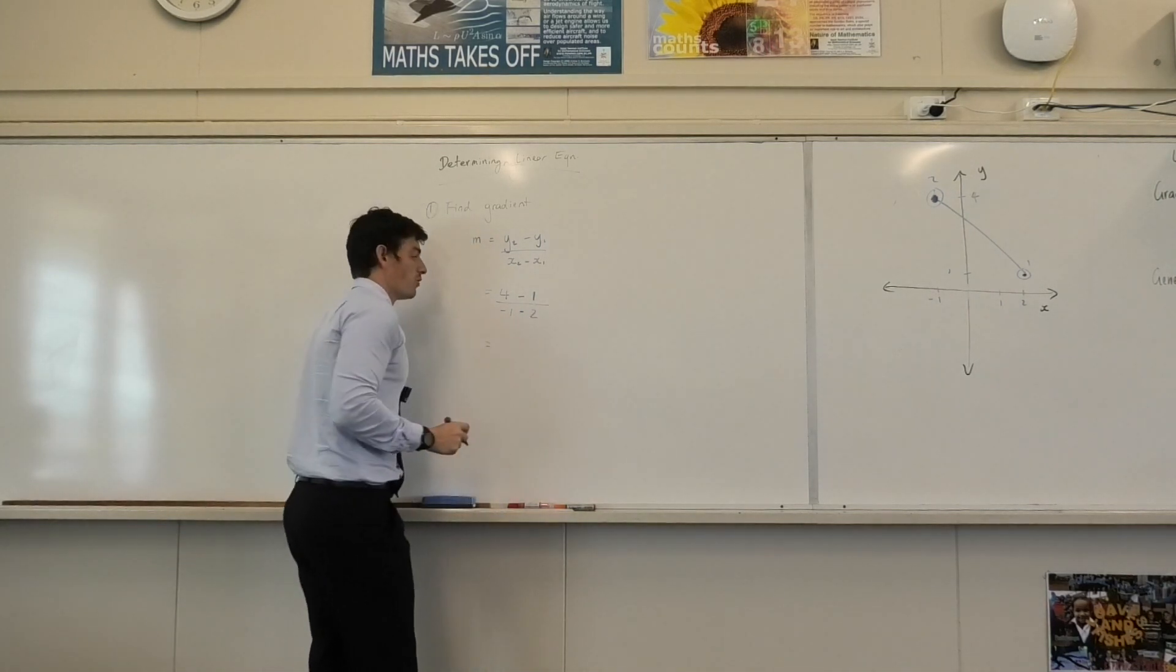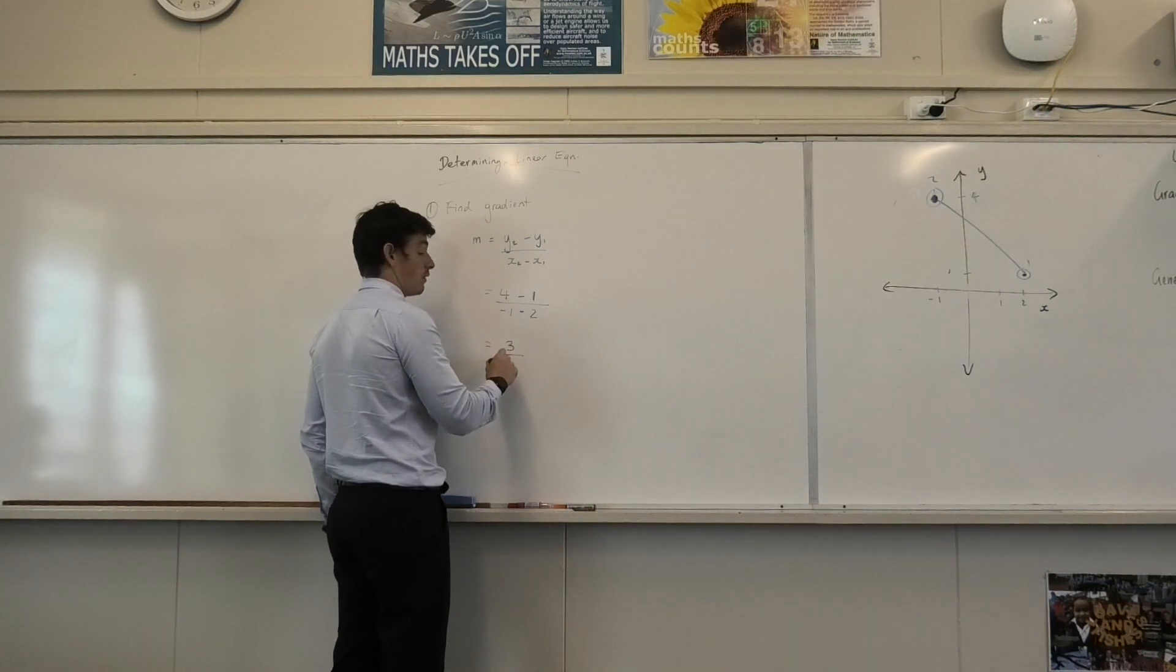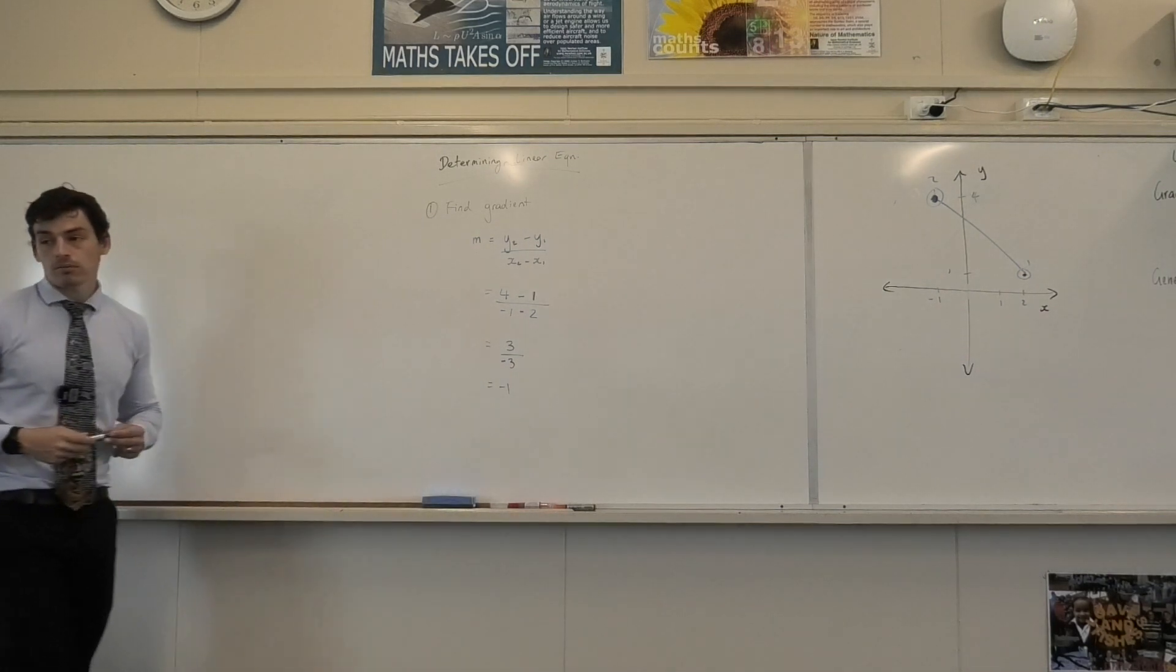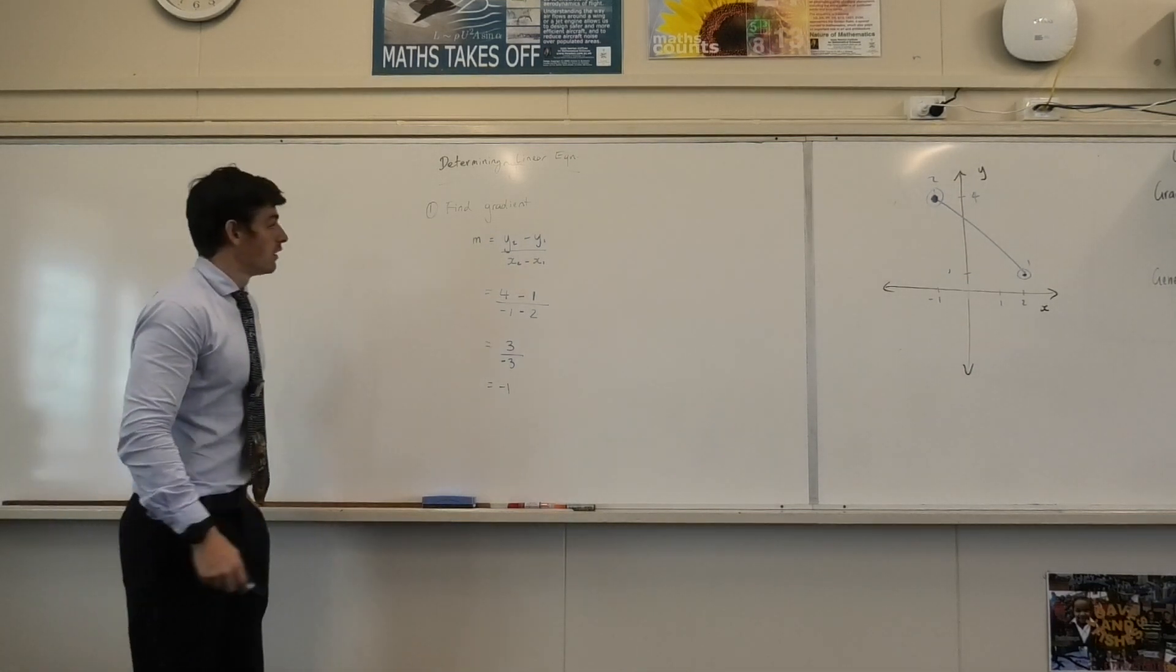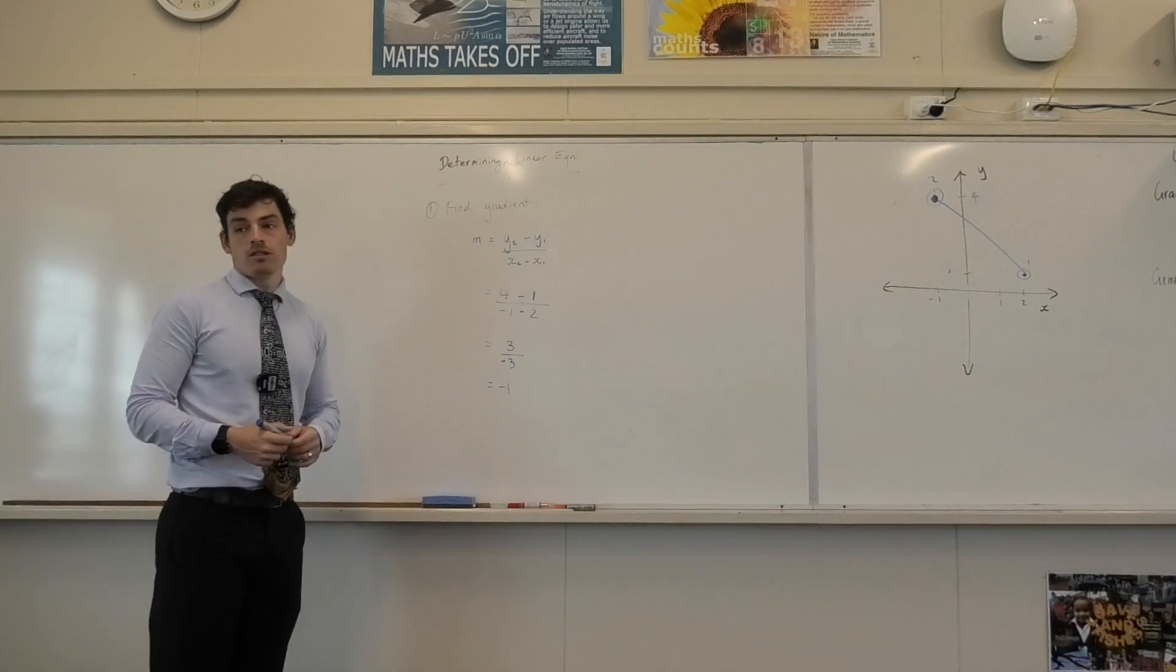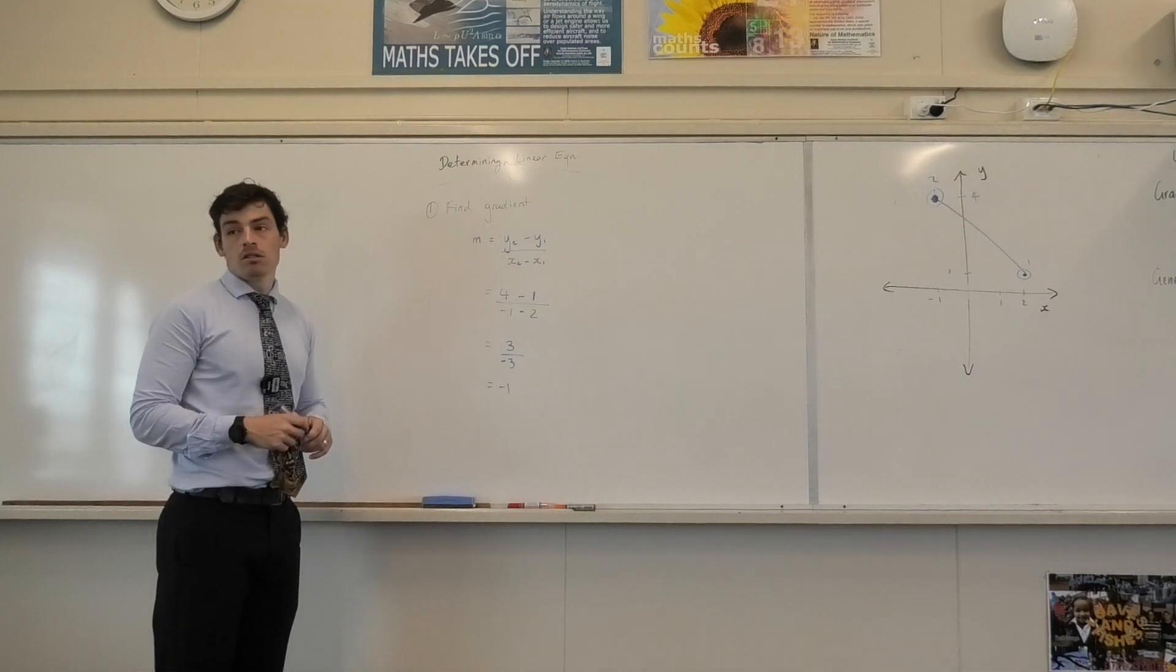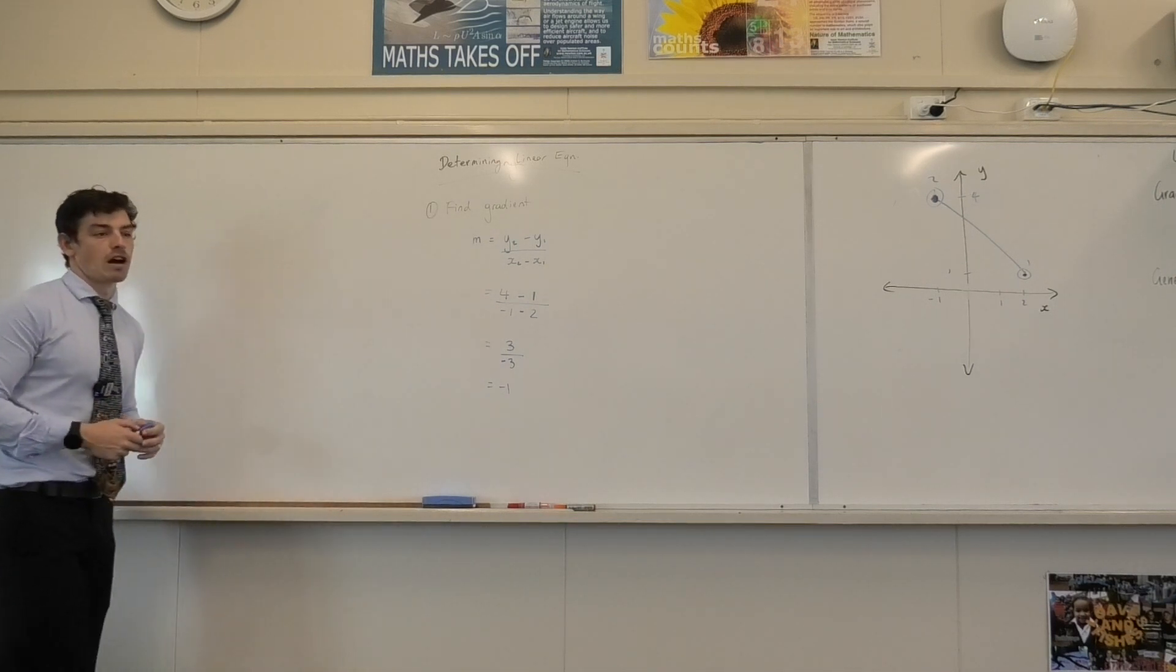Yep. It is just 2. So that gives me 3 over negative 3, which means my gradient equals negative 1. Now I could look for my y-intercept here. What's my y-intercept going to be? 3. 3. Okay. I can see that by the graph.